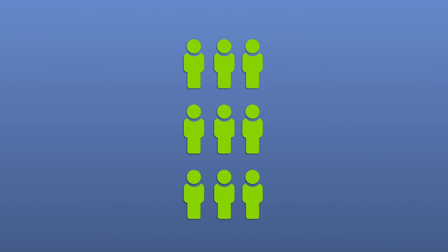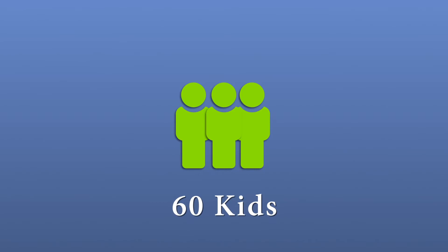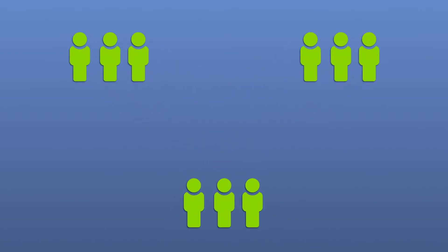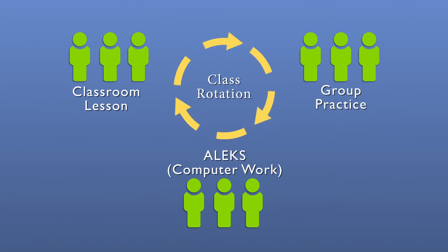We've taken all of our kids and combined them together. Let's say we have 30 in each class, so we've got 60 kids. We divide them into three groups of 20, so each student's assigned a group. And on any given day, one group will start out with a lesson.